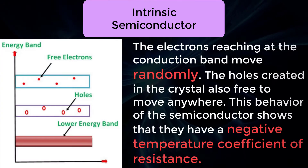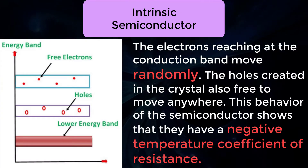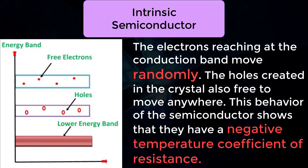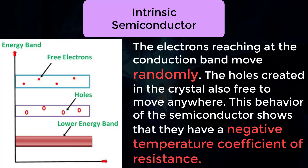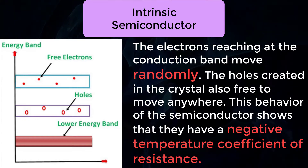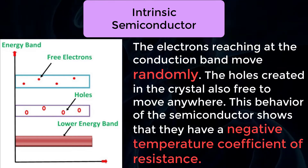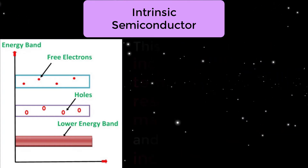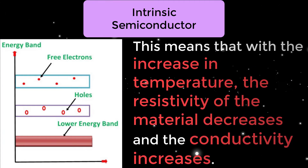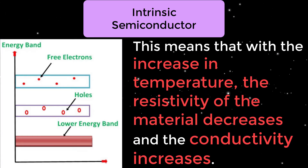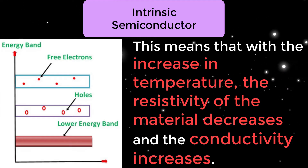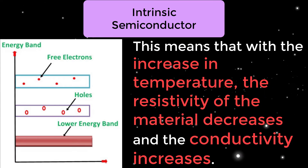The electrons reaching the conduction band move randomly, and the holes created in the crystal are free to move anywhere. This behavior of the semiconductor shows that they have a negative temperature coefficient of resistance, meaning that with the increase in temperature, the resistivity of the material decreases and the conductivity increases.